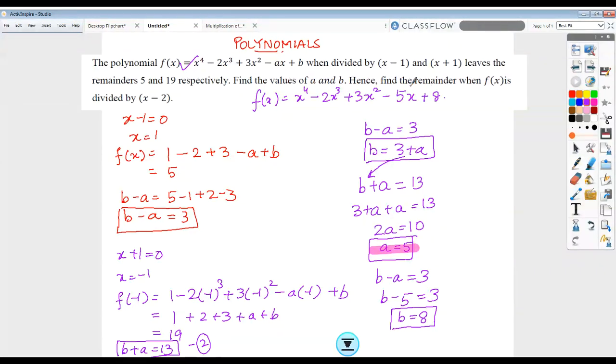Now I can easily find the remainder when this polynomial is divided by (x - 2) by substituting x as 2, which is the zero of this divisor. On substitution, I will get the remainder to be 10. Thank you for watching the video.